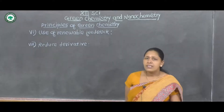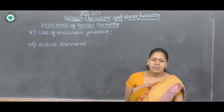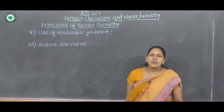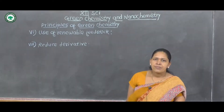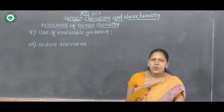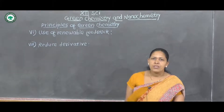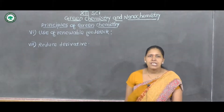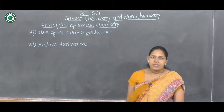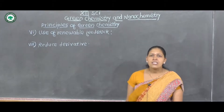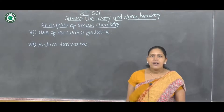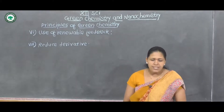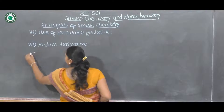The next principle is reduced derivatives. What is meant by reduced derivatives? For example, suppose one reaction takes place in five steps consisting of protection and deprotection of some group — those unnecessary steps in chemical synthesis should be avoided. Another route for the chemical reaction should be developed. For example, consider metahydroxybenzaldehyde.